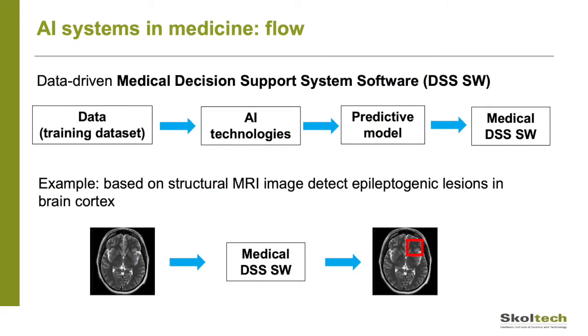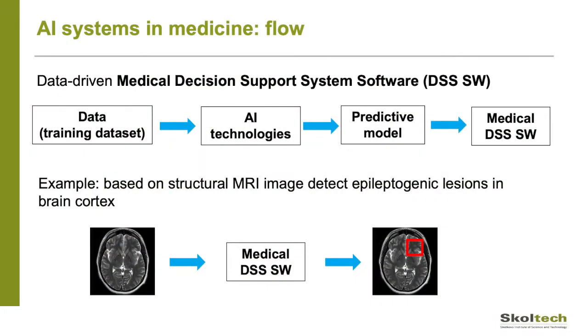What is an AI system in medicine? Let's focus on data-driven, not rule-based, medical decision support systems, which could be approximated with this flow: we have training data, we apply AI methods, get a predictive model, and finally help the doctor to make decisions. The example of such a system could be a system of epileptogenic lesions detection in the brain cortex — we give it a structural MRI image and receive potential areas of interest.